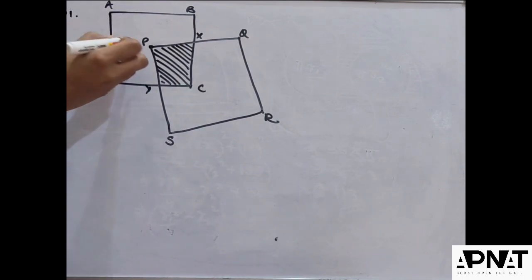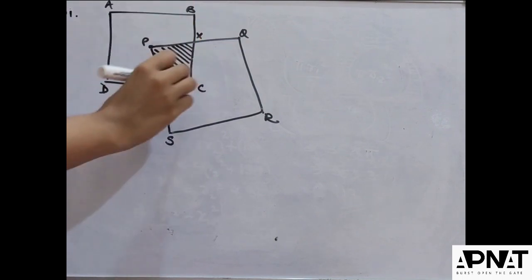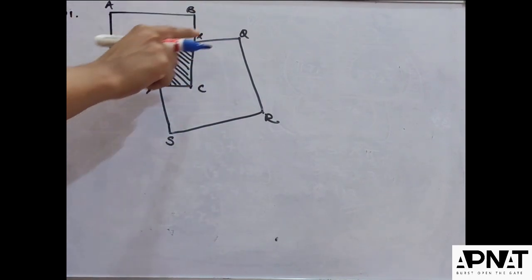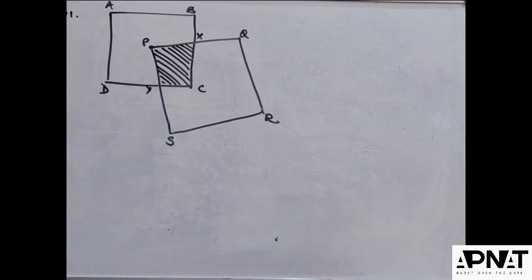They are intersecting such that this point P of the square PQRS is exactly at the center of this other square ABCD. And they are intersecting at two other points, so the square PQRS is cutting the edge BC at X and the edge CD at Y.